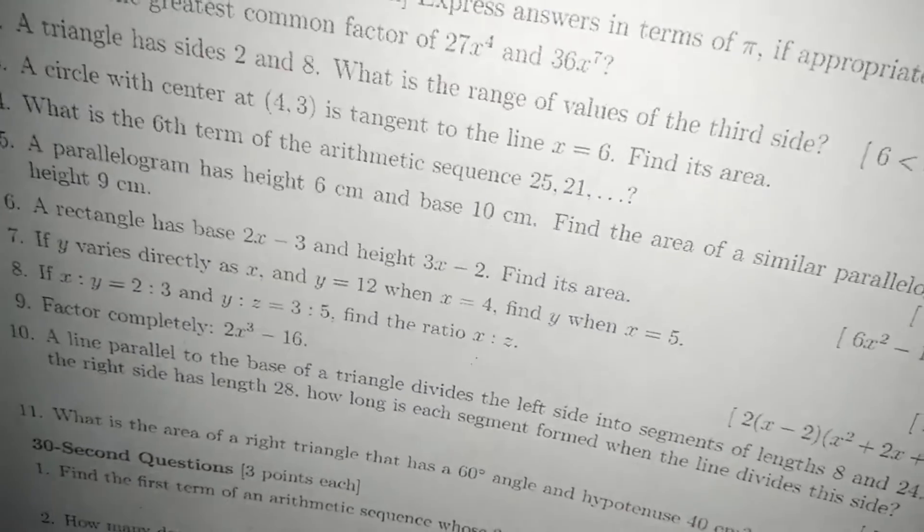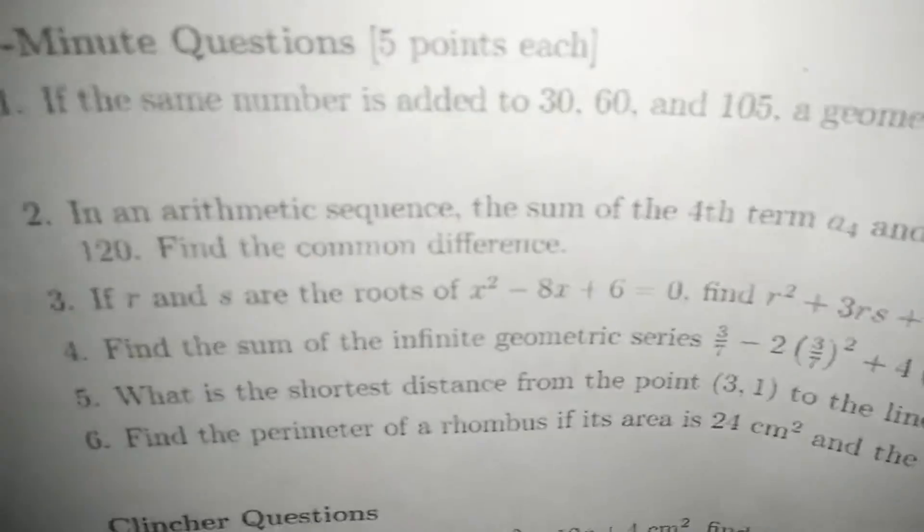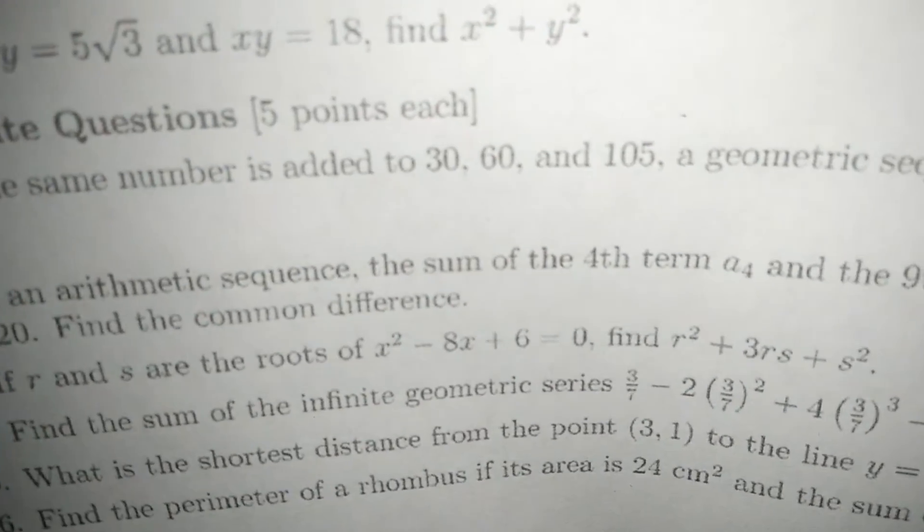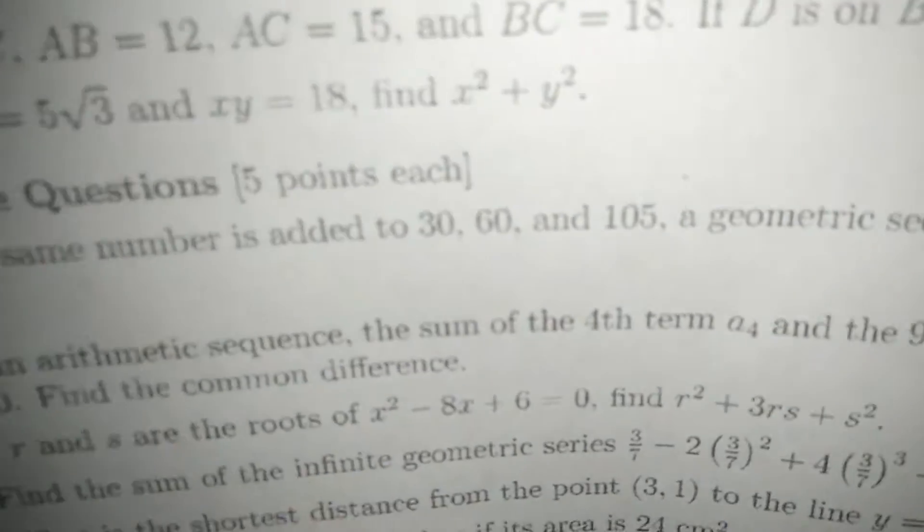Which is 60 seconds for the difficult round. So we will start right away. For our first problem, we have: if r and s are the roots of x squared minus 8x plus 6 equals 0, find r squared plus 3rs plus s squared.